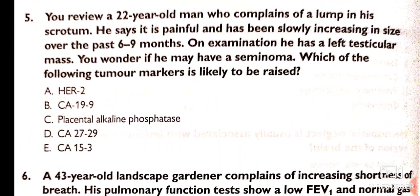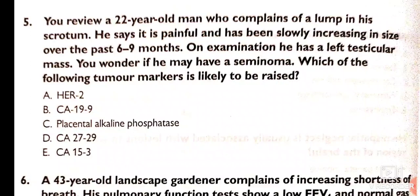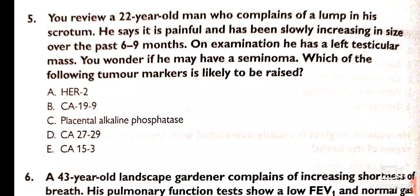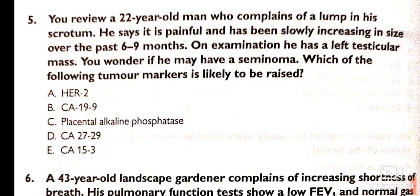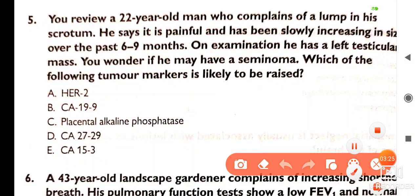A 22-year-old man complains of a lump in his scrotum that is painful and has been slowly increasing in size over the past six to nine months. On examination he has a left testicular mass. You wonder if he may have seminoma. Which tumor marker is likely to be raised? The best answer is alkaline phosphatase — specifically placental alkaline phosphatase. For reference, CA 19-9 is associated with pancreatic carcinoma.